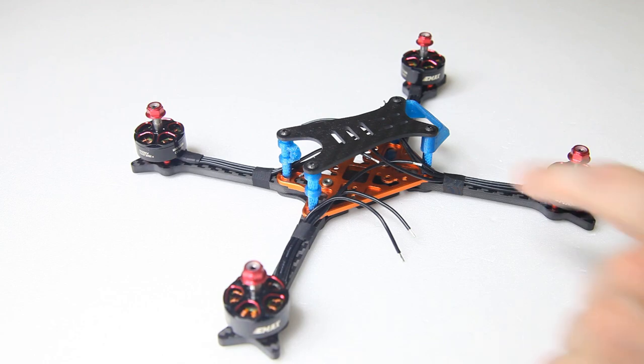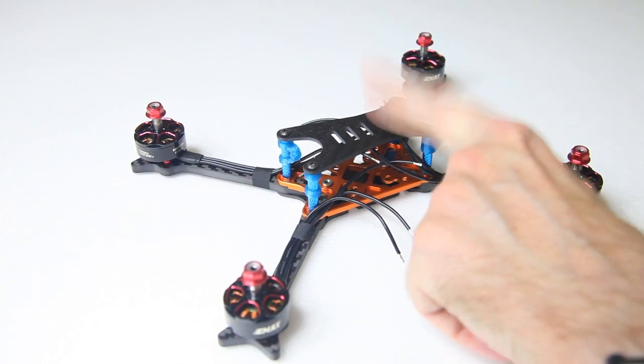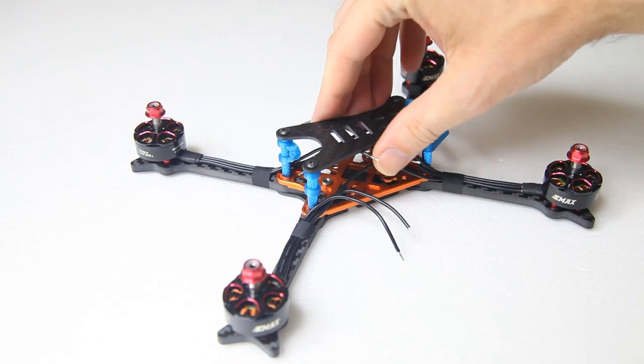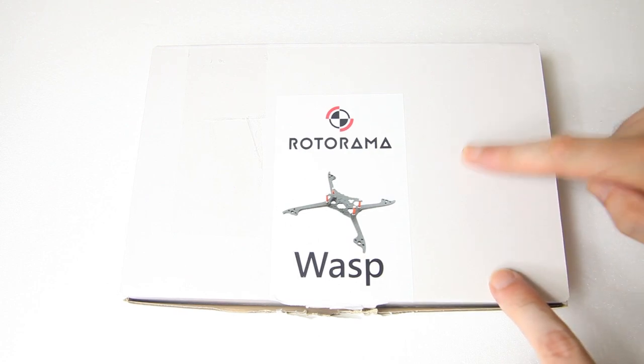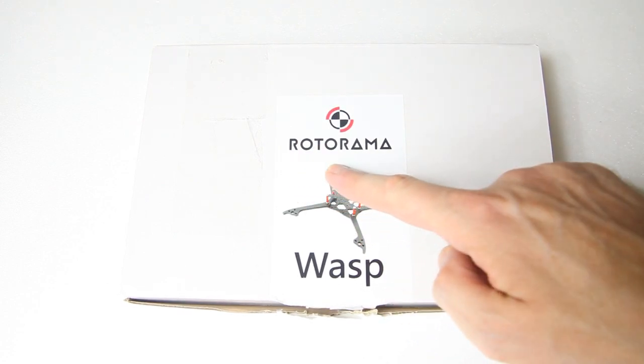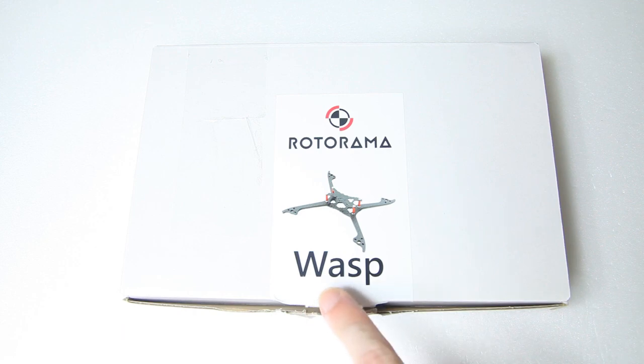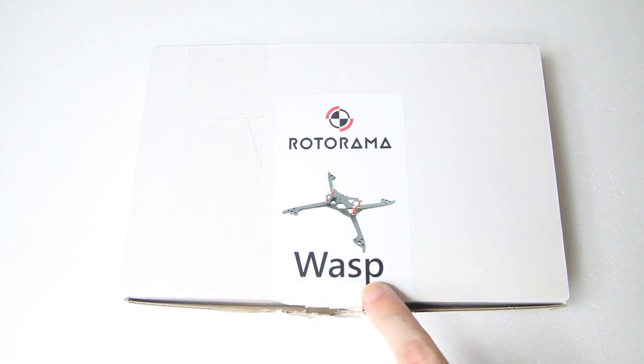I would have liked something lighter than this. So in this video I'm going to take a look at an alternative to this frame. That alternative is in this box. It is a box from Rotorama as you can see, and it's called the Wasp.